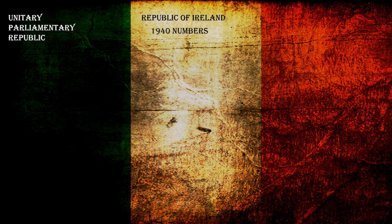Republic of Ireland. Unitary Parliamentary Republic. Éamon de Valera. 27,000 square miles, 3,000,000 population.